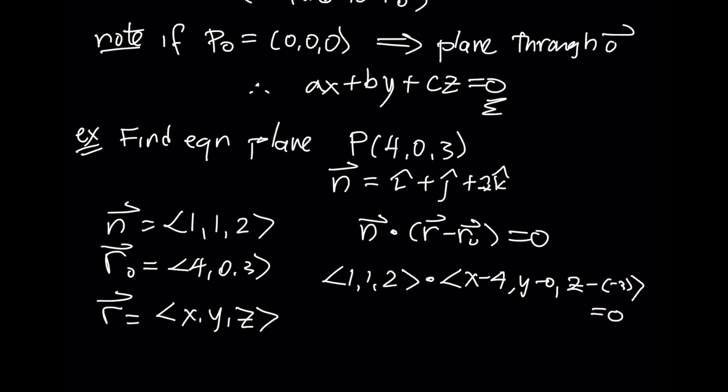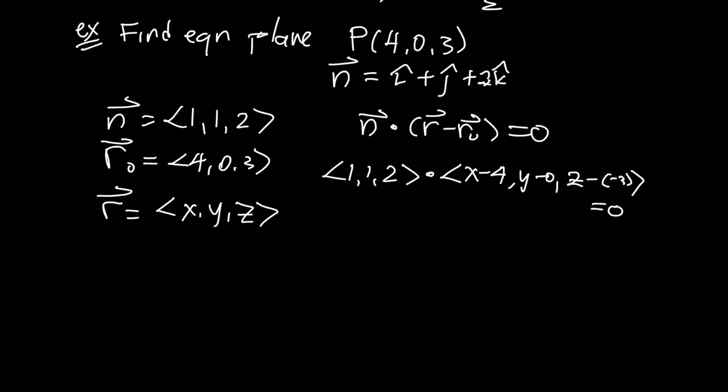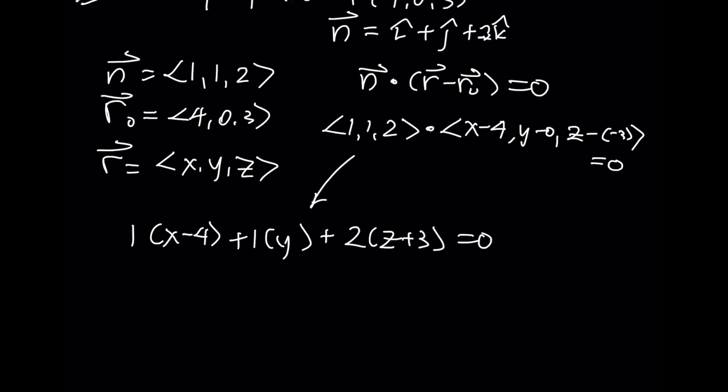That's going to give me 1 bunch of (X - 4), 1 bunch of Y, and 2 bunches of (Z + 3) equals 0. So we'll get X - 4 + Y + 2Z + 6 = 0. So X + Y + 2Z = -2. And this represents the scalar equation of this plane.